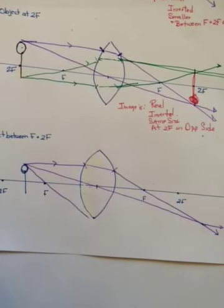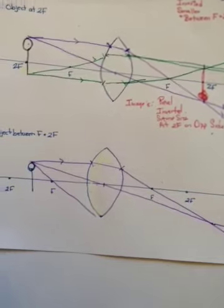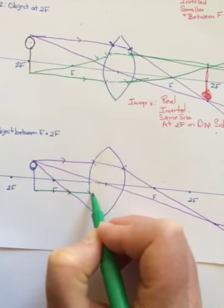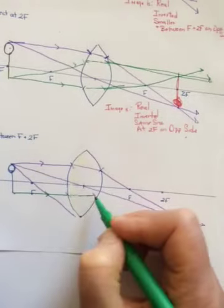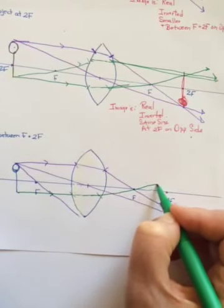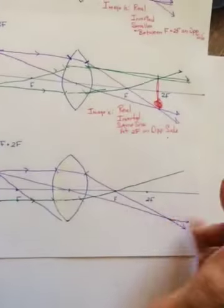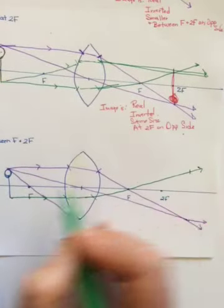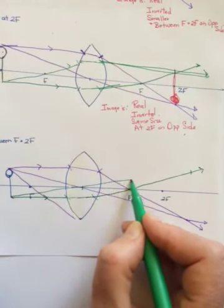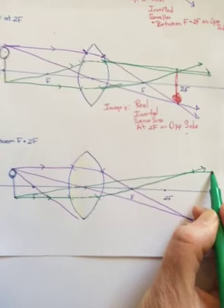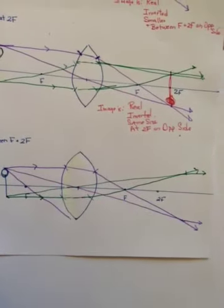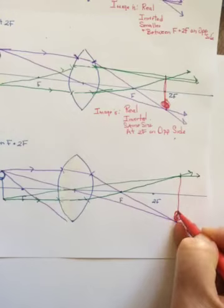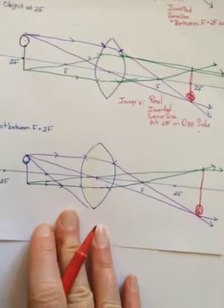From the bottom, a ray going in parallel to the principal axis will get bent in such a way that it'll come out through f on the other side of the lens. Then going through the optical center, it should cross somewhere up here. It's all about knowing where you want it to cross and then cheating just a little.